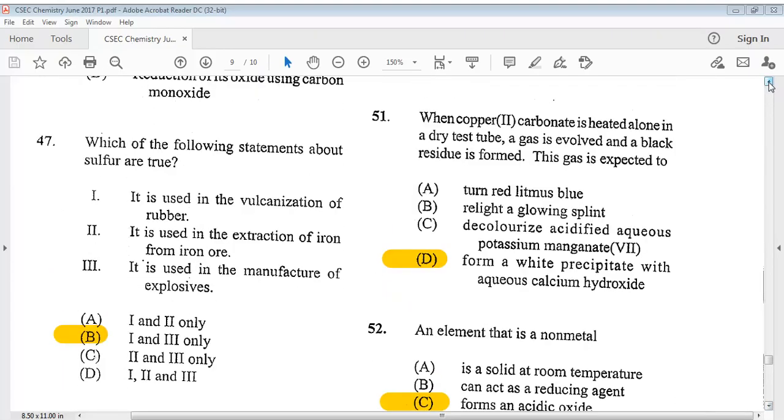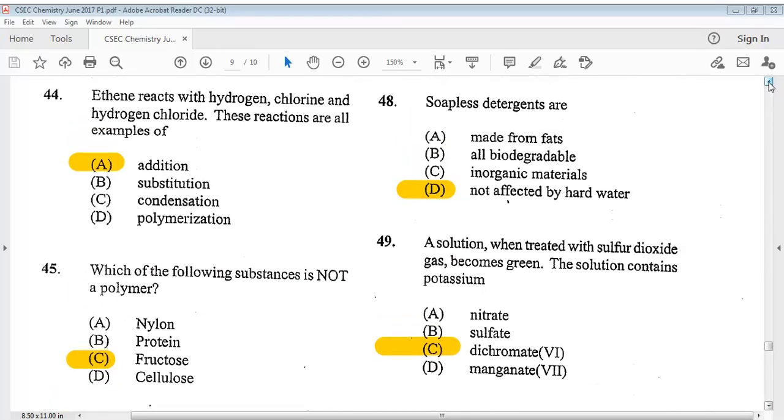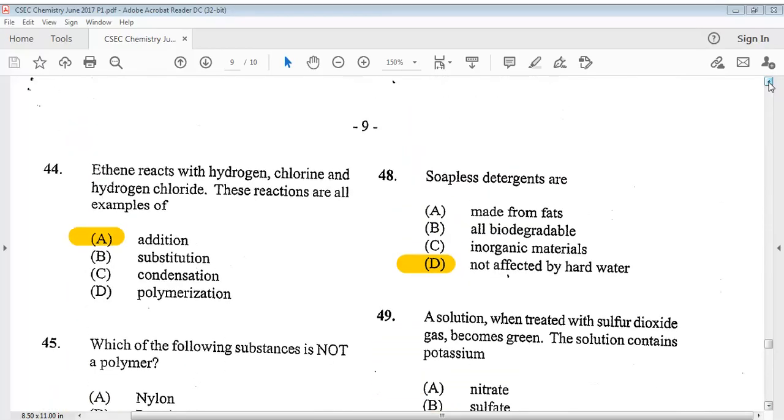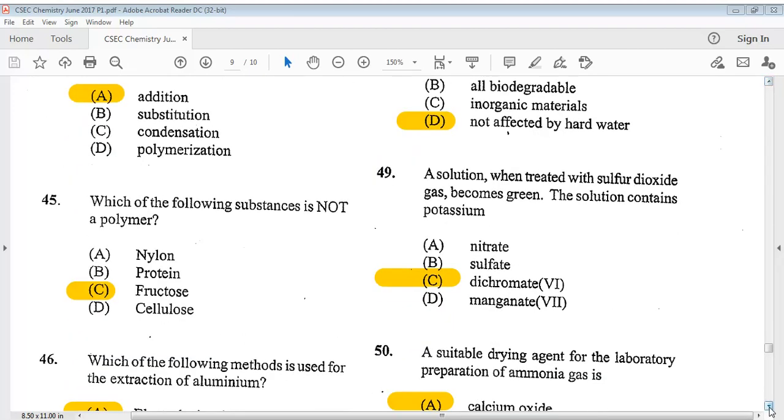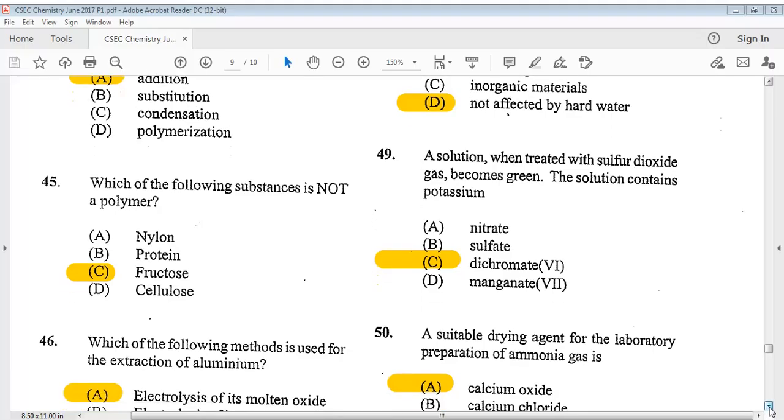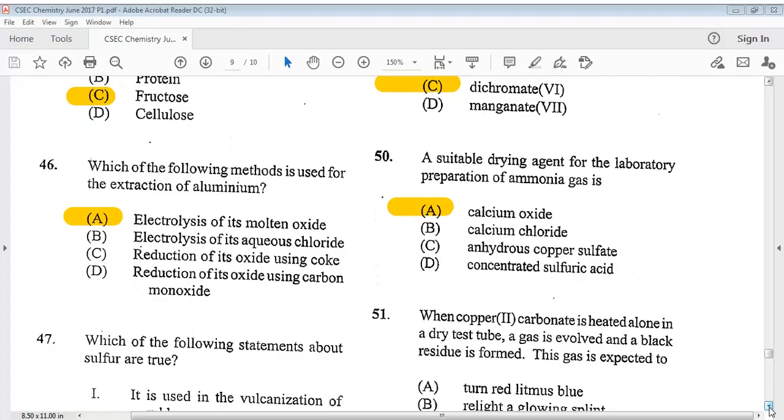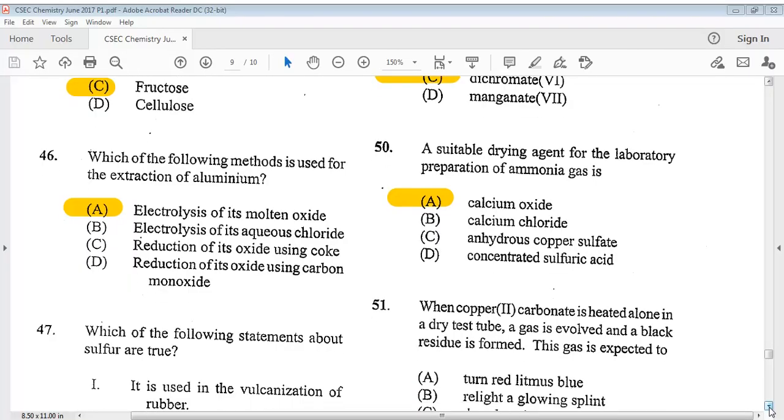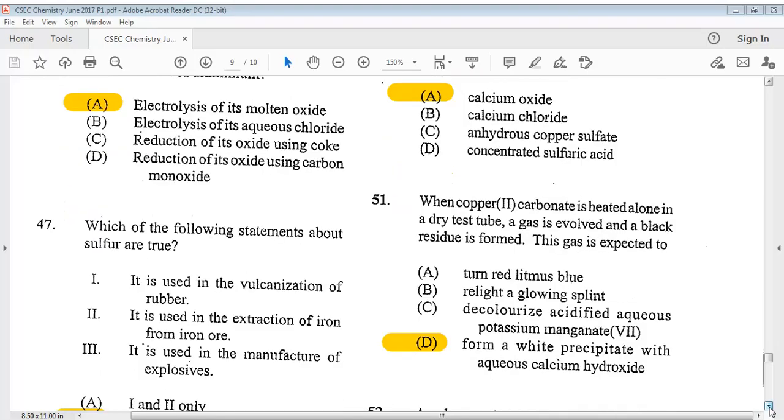Let's go to question 48. It says soapless detergents are? The answer is D, not affected by hard water. Question 49. A solution when treated with sulfur dioxide gas becomes green. The solution contains potassium. The answer is C, dichromate 6. Question 50. A suitable drying agent for the laboratory preparation of ammonia gas is? The answer is A, calcium oxide.